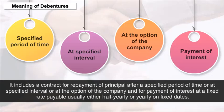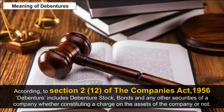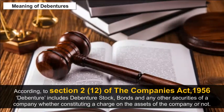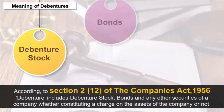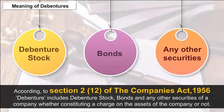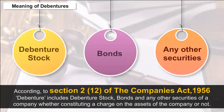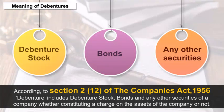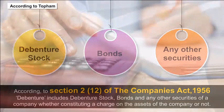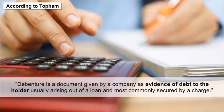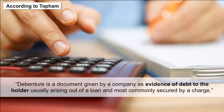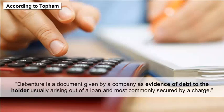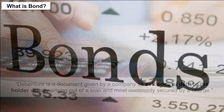According to Section 2(12) of the Companies Act 1956, debenture includes debenture stock, bonds, and any other securities of a company whether constituting a charge on the assets of the company or not. According to Topham, a debenture is a document given by a company as evidence of debt to the holder, usually arising out of a loan, and most commonly secured by a charge.